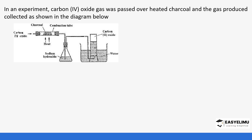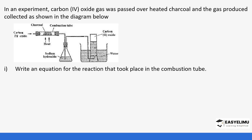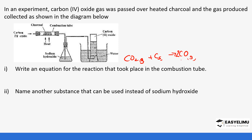Carbon dioxide reacts with charcoal — this is another method of producing carbon monoxide. Question: Write the equation for the reaction that took place. Answer: CO₂ (g) + C → 2CO. We balance this by putting a 2 in front of CO. Question: Name another substance that can be used instead of sodium hydroxide. Answer: We can use potassium hydroxide.